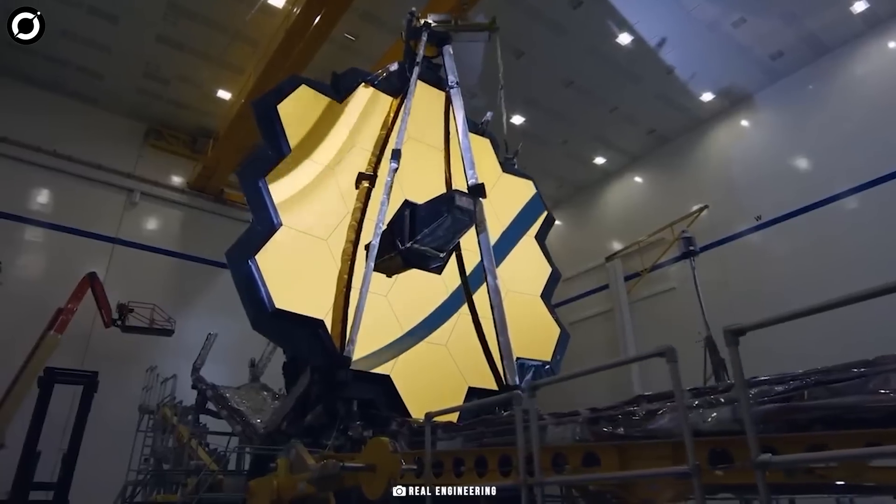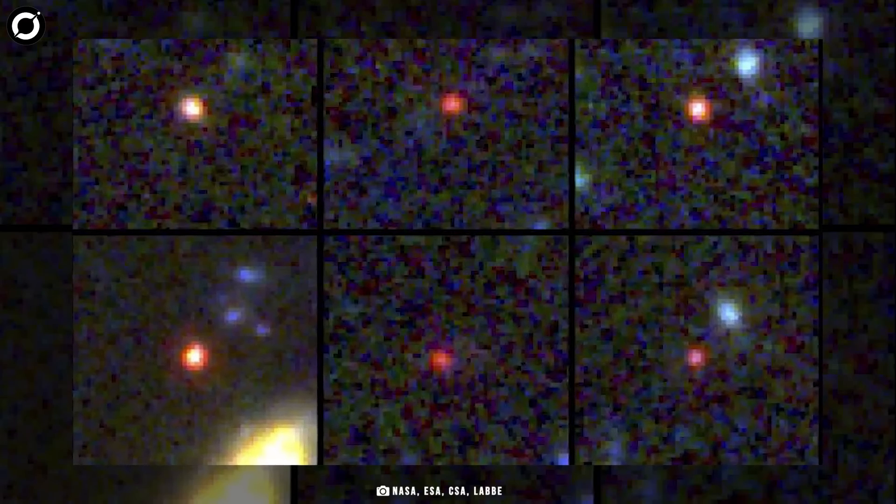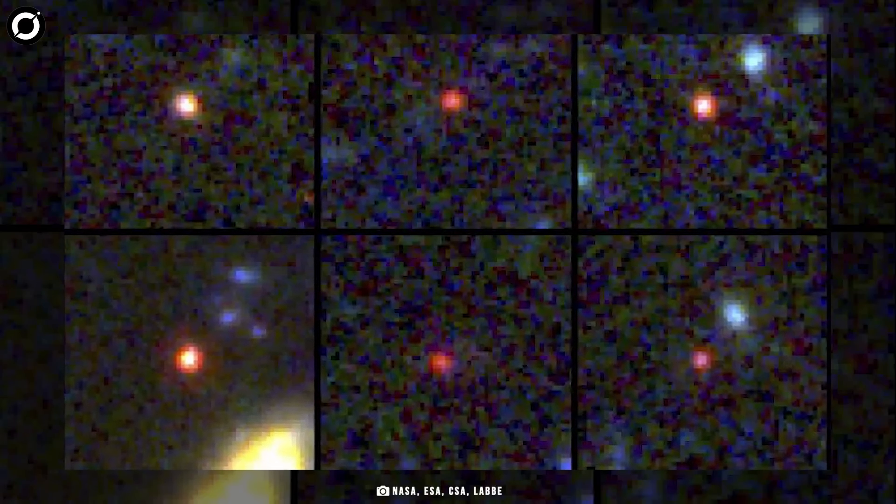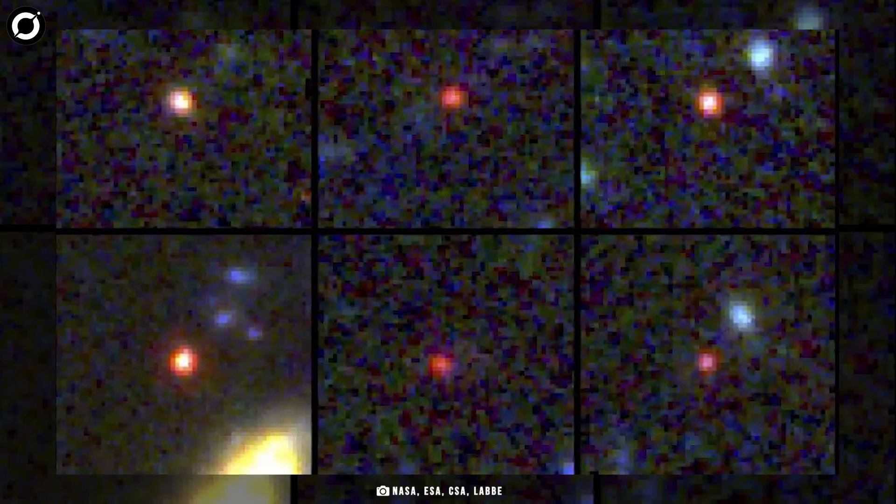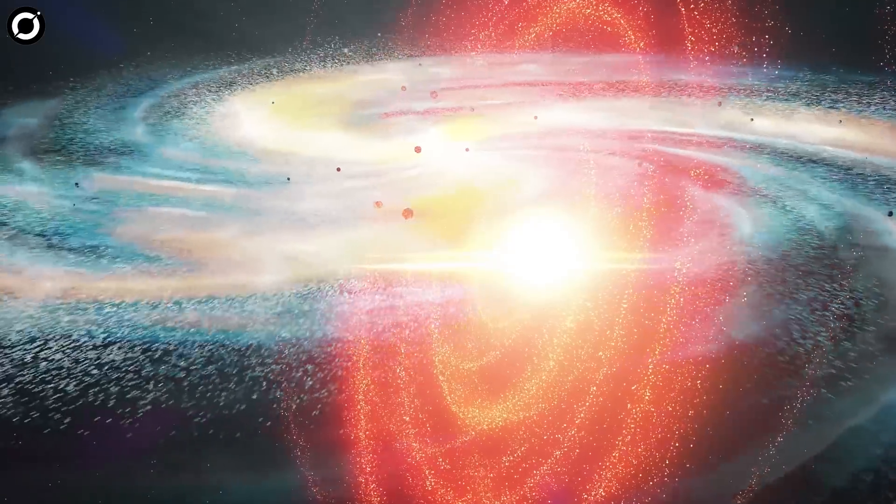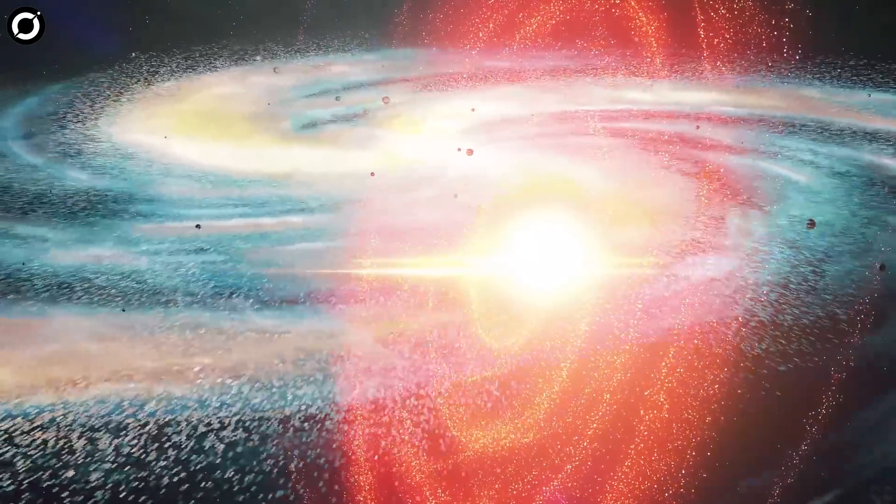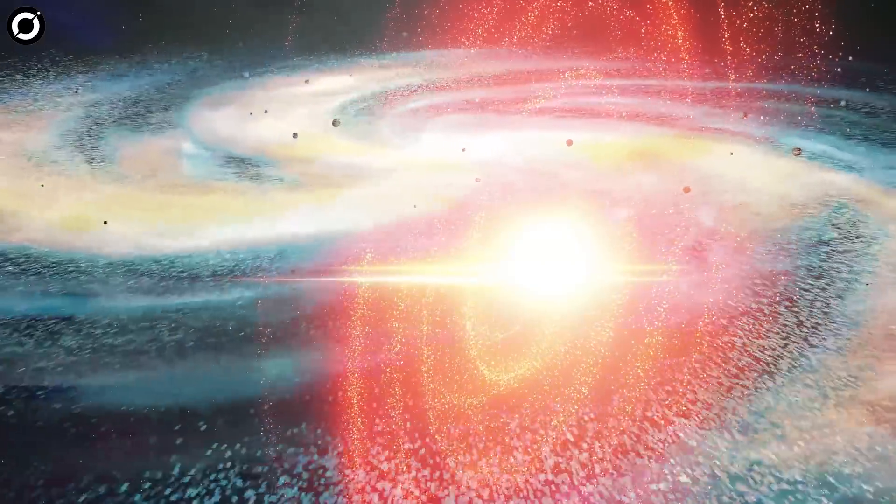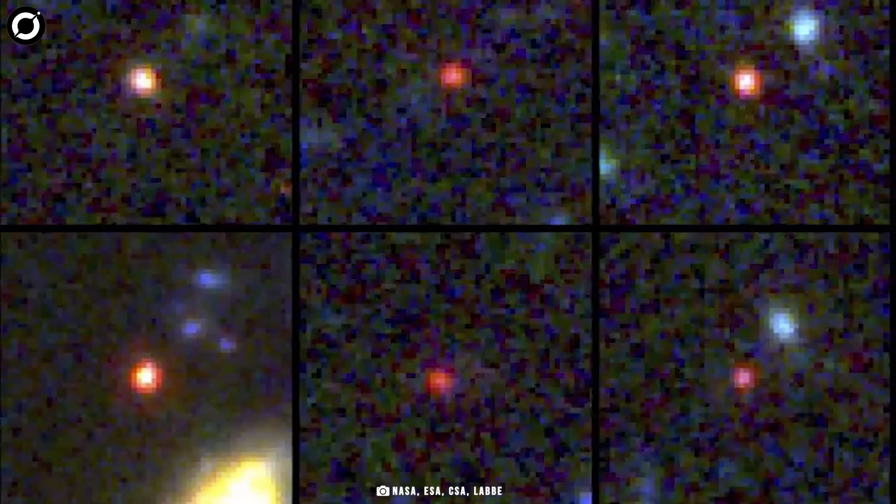NASA's multi-billion dollar telescope has just spotted six gigantic galaxies, each roughly the size of our own Milky Way. A group of galaxies from the dawn of the universe that are so massive they shouldn't exist.